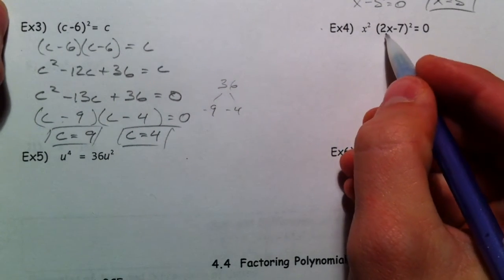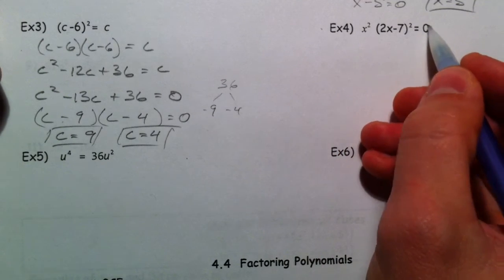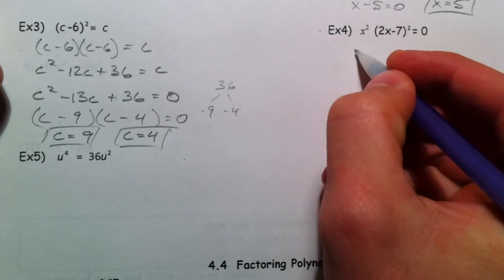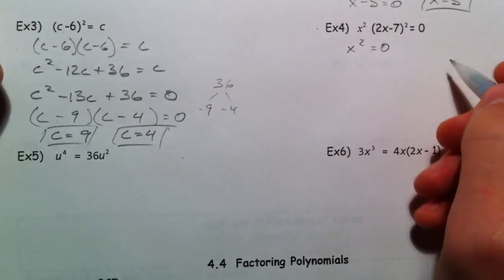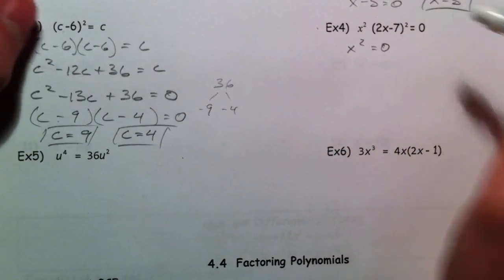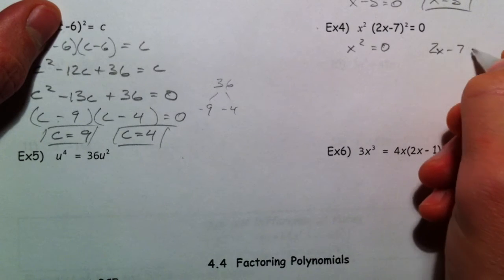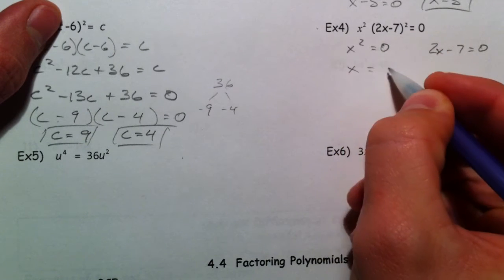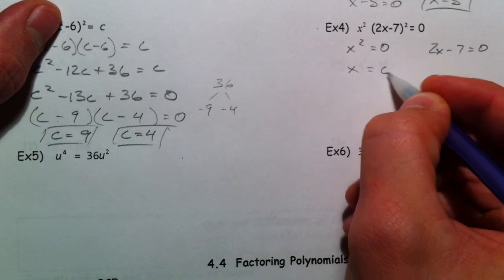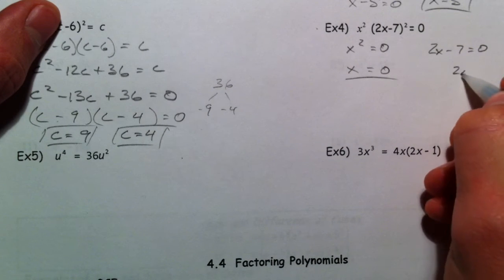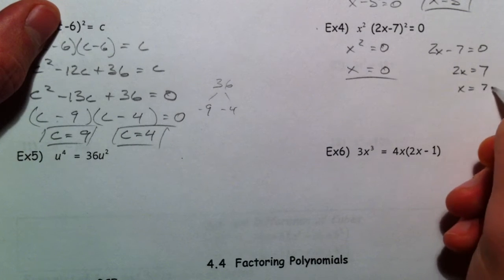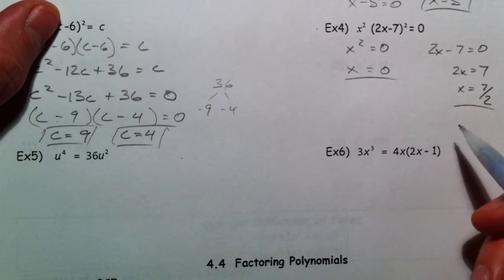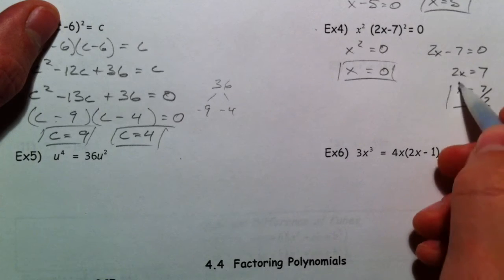Alright, same deal here. Except, we don't multiply this one out because it's already set equal to 0. This one wasn't set equal to 0, so we had to multiply it out to get it set equal. So here you can say either x squared equals 0, or separately, 2x minus 7 equals 0. You don't have to do the x squared, because when you square it, you're going to get plus or minus when you take the square root of it. So you just get 0, because plus or minus 0 is the same thing. Add the 7, then x equals 7 halves.